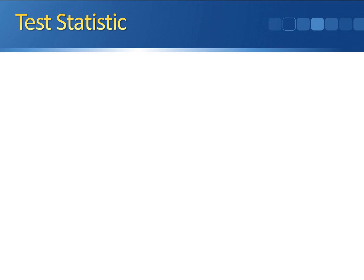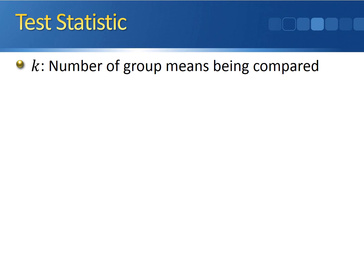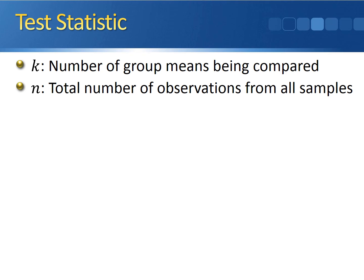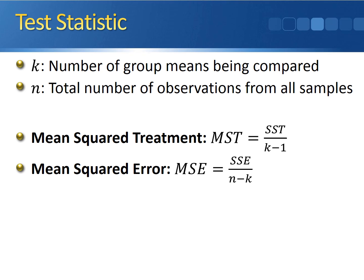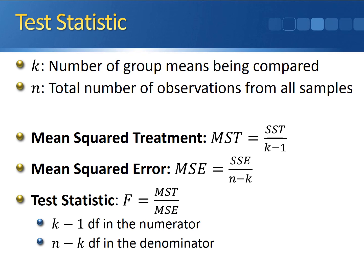Now we have all the information needed to construct the test statistic. Let K be the number of group means being compared, and N be the total number of observations. The mean squared treatment, MST, is the SST divided by K minus 1. The mean squared error, MSE, is the SSE divided by N minus K. The test statistic for ANOVA follows an F distribution and equals MST divided by MSE, with K minus 1 degrees of freedom in the numerator and N minus K degrees of freedom in the denominator.